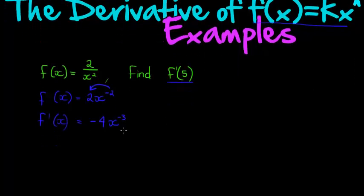To write this without a negative exponent would be negative 4 divided by x to the power of positive 3.